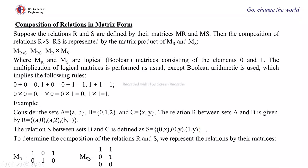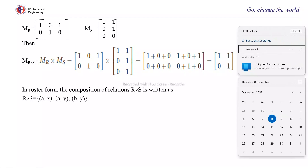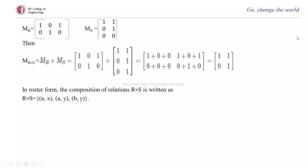Now M of R∘S equals M_R multiplied by M_S. You perform matrix multiplication using Boolean arithmetic: first row times first column gives the first element, first row times second column gives the second element, second row times first column gives the third element, and second row times last column gives the fourth element.